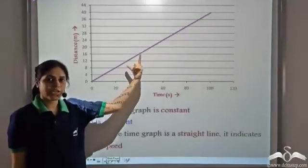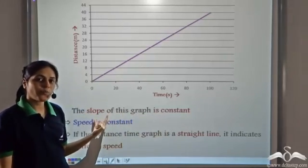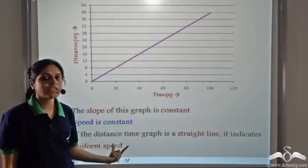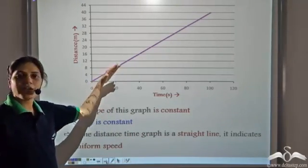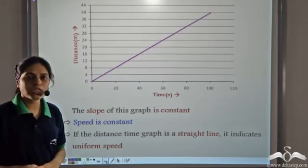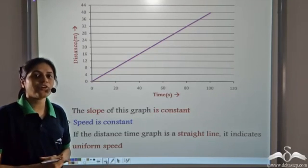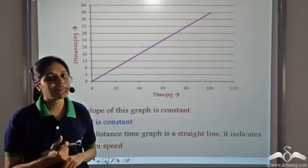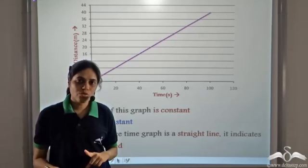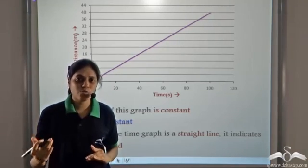Since this is a straight line graph, the slope is constant. Since slope equals speed, the speed is constant. So if the distance-time graph is a straight line, it indicates uniform speed. Just by having a glance at the graph, we can say that the tortoise is moving with uniform speed — we do not have to calculate anything. This is the benefit of using graphs: just by looking at the graph, we can gather a lot of information. So if a body moves with uniform speed, the distance-time graph will be a straight line, and conversely, if the distance-time graph is a straight line, the body is moving with uniform speed.